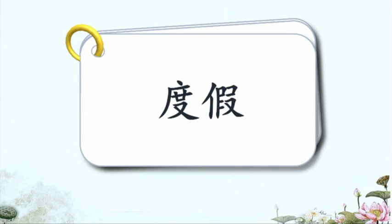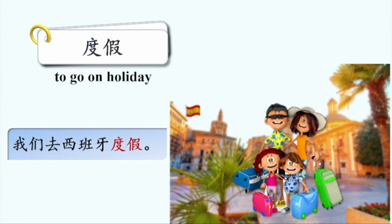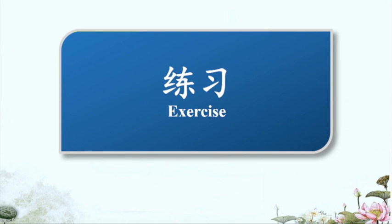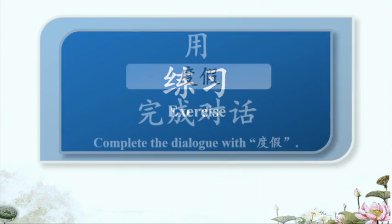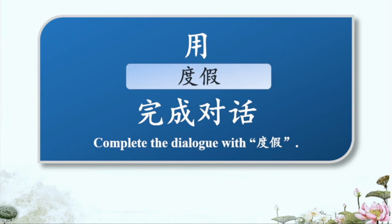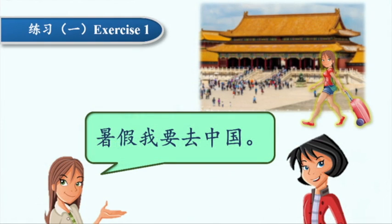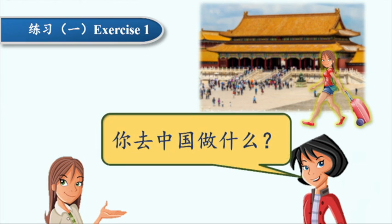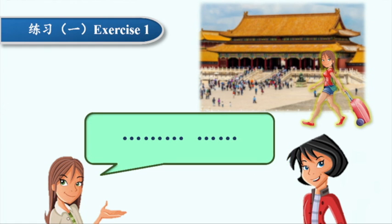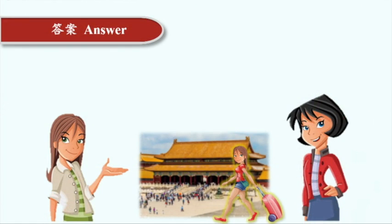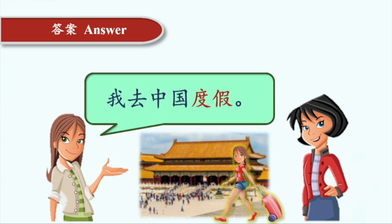度假。我们去西班牙度假。练习：用度假完成对话。Complete the dialogue with 度假. 练习一 Exercise one: 暑假我要去中国。你去中国做什么？答案 Answer: 我去中国度假。